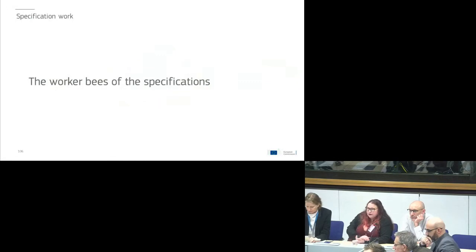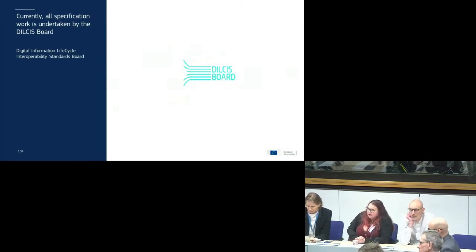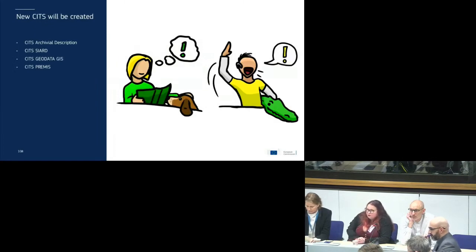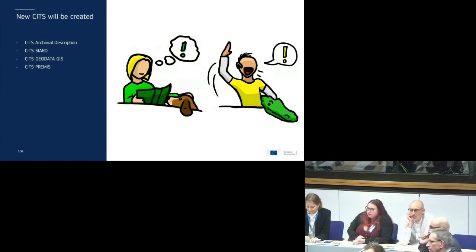The worker bees of the specifications are the DILCIS board — the Digital Information Life Cycle Interoperability Standards Board. In cooperation with people from the building block having different specialties, the DILCIS board maintains the specifications and took over the specifications that were drafts in the first e-ARK project. We are going to create some new SITS — one for archival description. We already have Archives Portal Europe who have specifications for archival description, and we will work in cooperation with them. Don't invent too many new wheels when the wheels are already there.